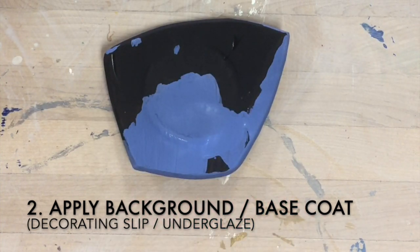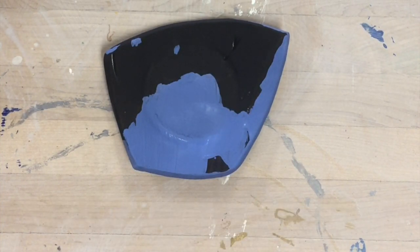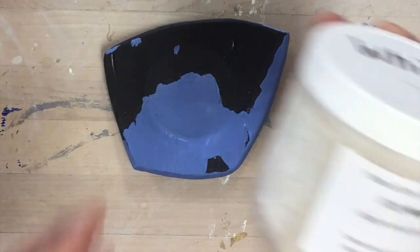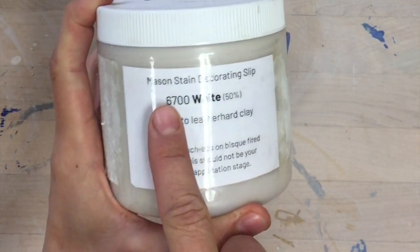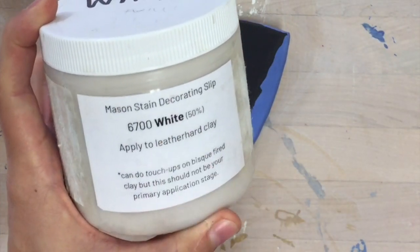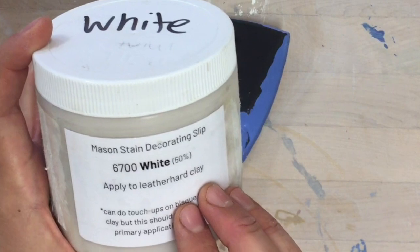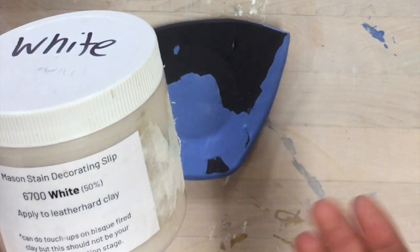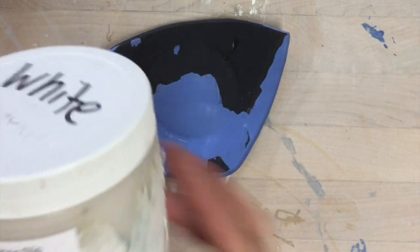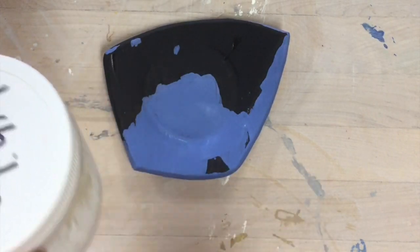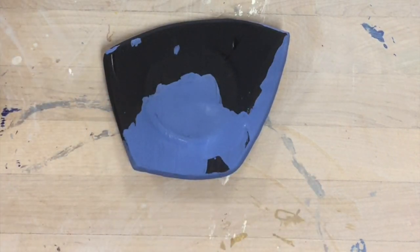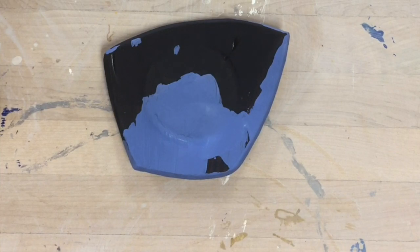An important thing to note, most of what we're using in our studio is homemade decorating slip, so it's going to have a label somewhat like this so you can find the color here. It's really important because the difference between what I'm making in here, decorating slip, and commercial underglazes which are in the same jars but they'll say underglaze and whatever company they're from, is that the commercial underglazes generally can be applied to both unfired and fired clay.